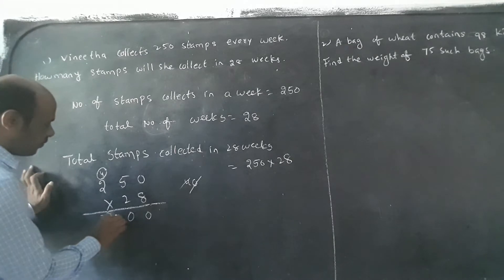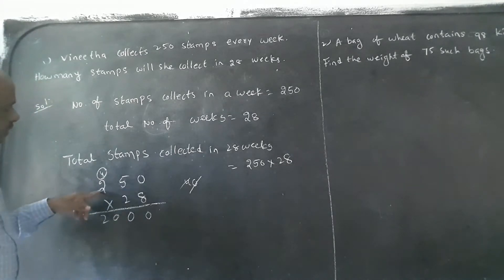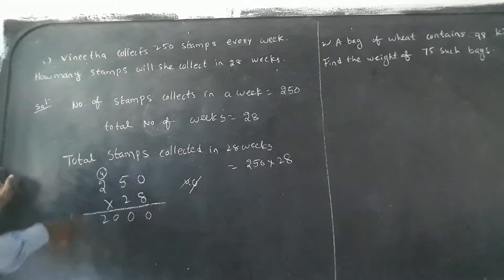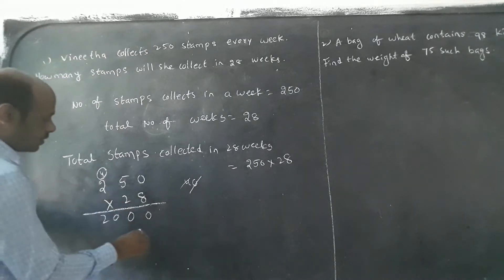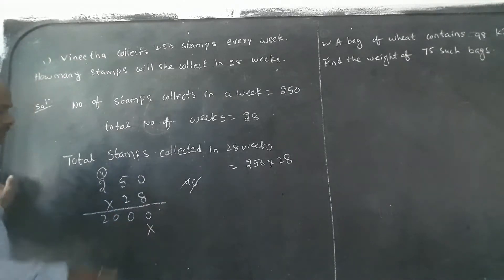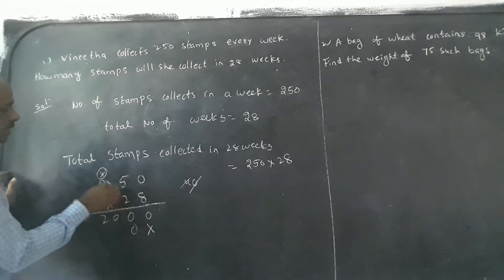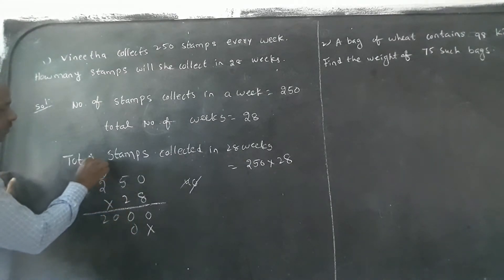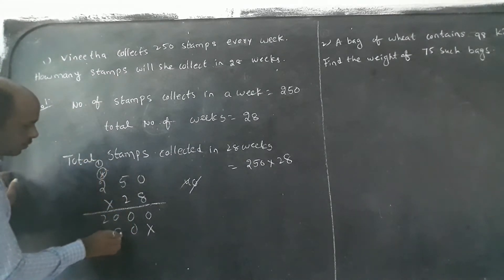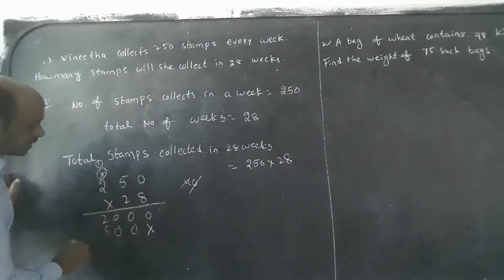Now, before number is not there, so no carry. One space — keep it. Then: two into zero is zero, two into five is ten — write zero carry one. Two into two is four, plus one is five.